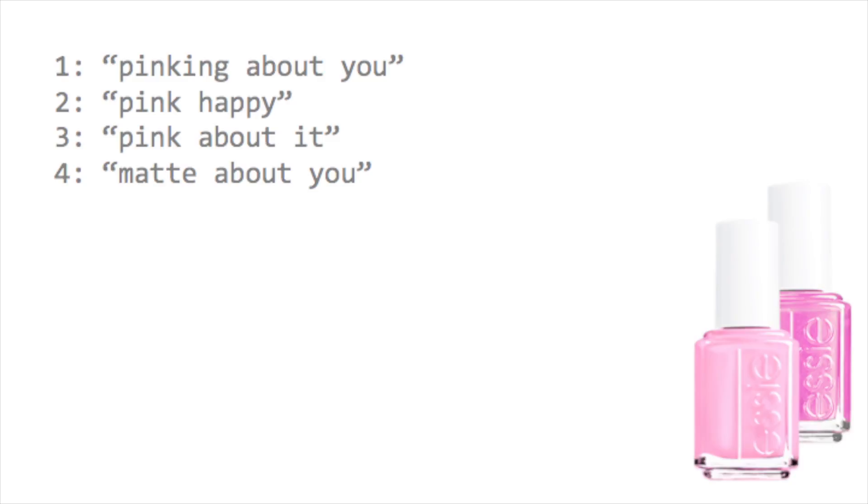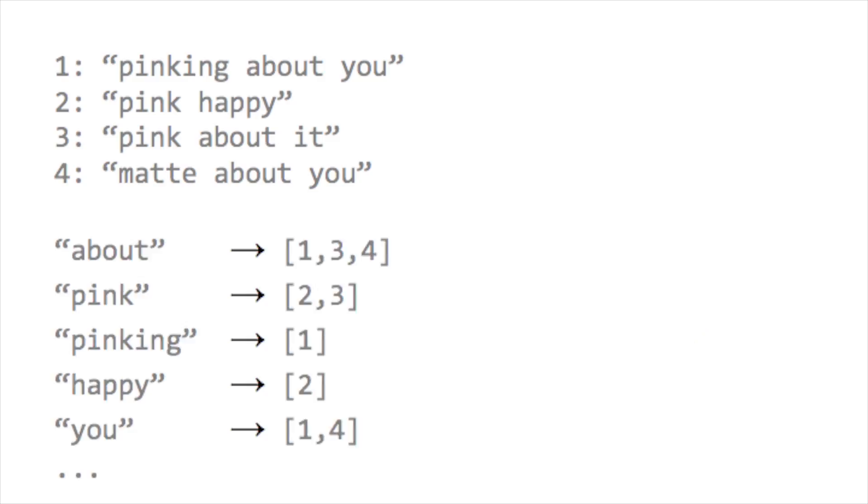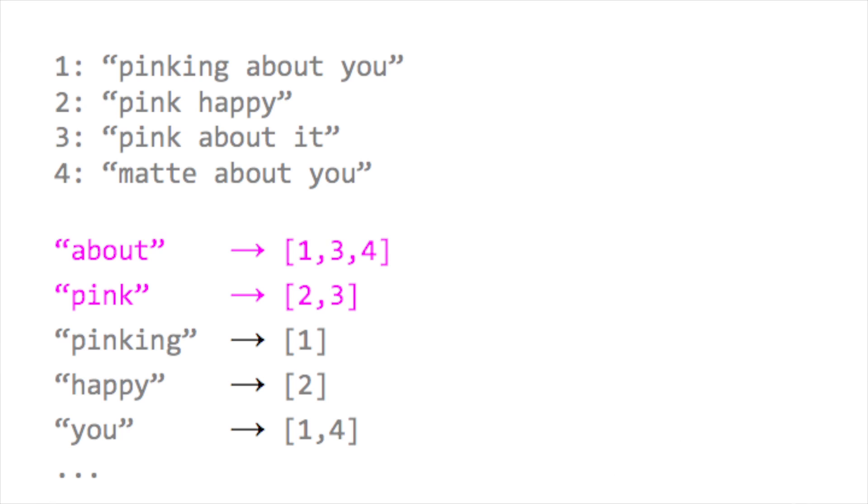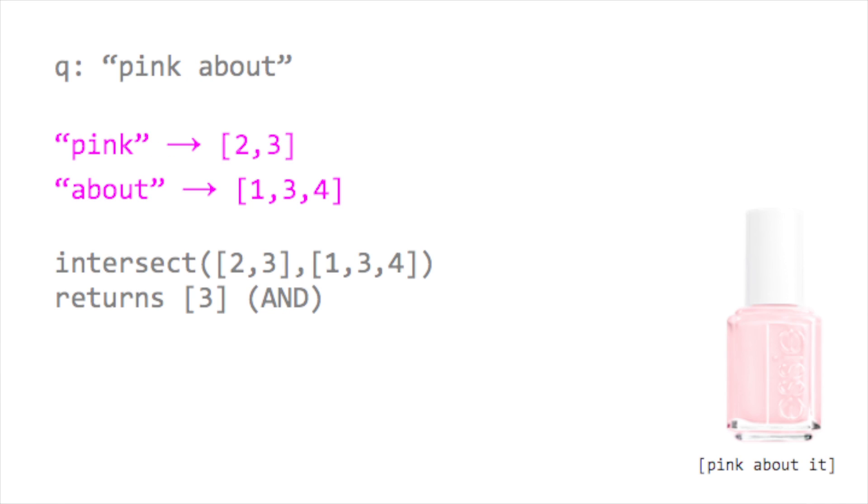I use nail polish names as the example because they're both very short and also very weird and hilarious — these are all real nail polish names from Etsy. Once it's built out these lists, we have a mapping: "file" appears in documents 1, 3, and 4; "pink" appears in documents 2 and 3. So when I want to look up "pink", I grab those documents and return two relevant nail polishes. It's not much harder to handle two terms — for a query like "pink about", we grab both lists, do a set intersection, and get the one document matching both words.